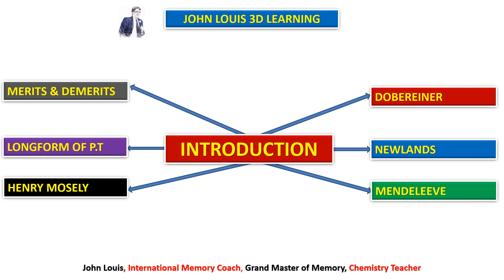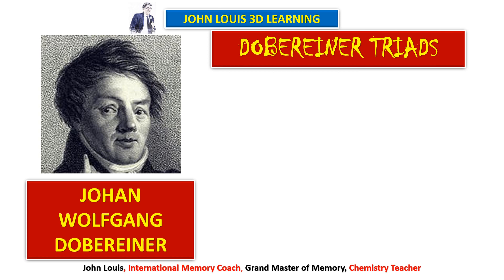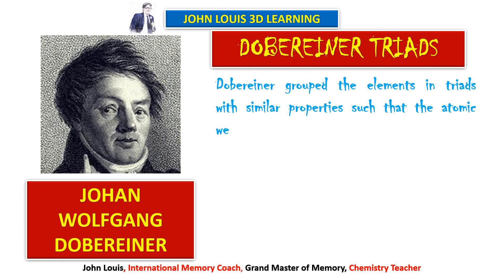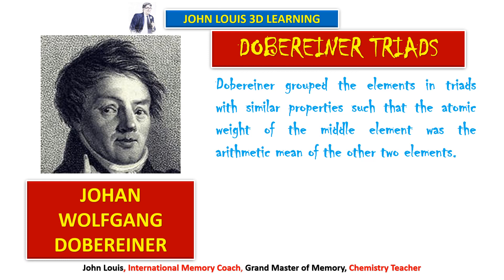We are going to see the merits and demerits of this long form of the periodic table. Dobereiner developed triads — during his period about 30 elements were discovered and he tried to classify them. He grouped elements in triads with similar properties such that the atomic weight of the middle element was the arithmetic mean of the other two elements.